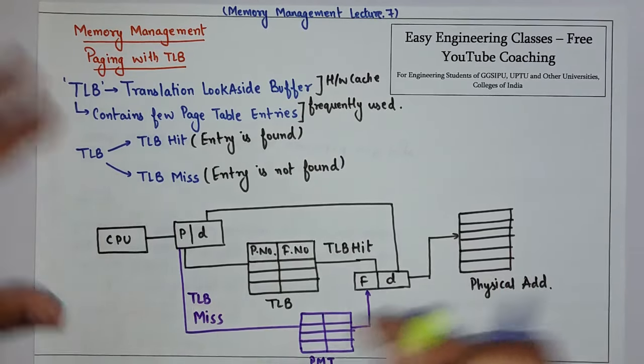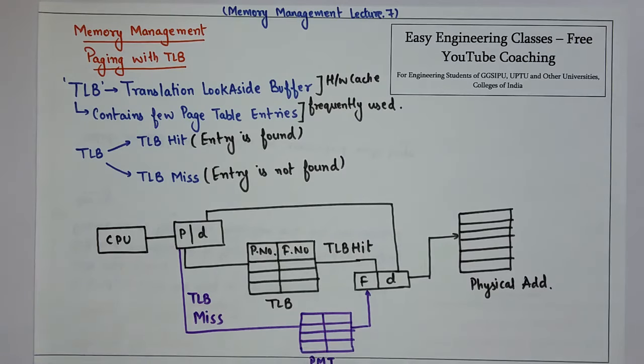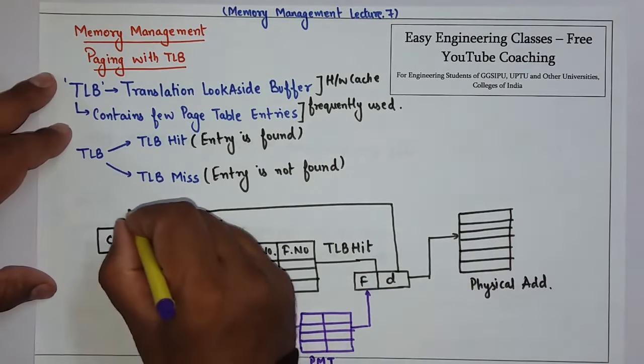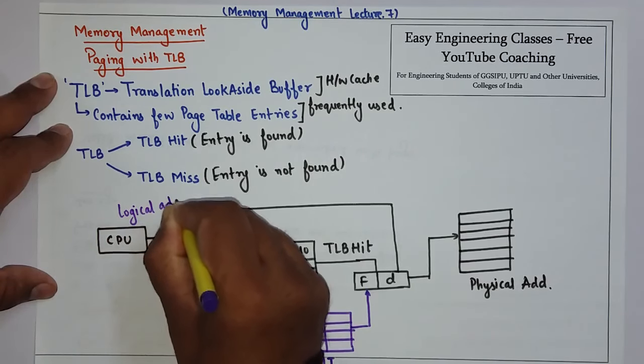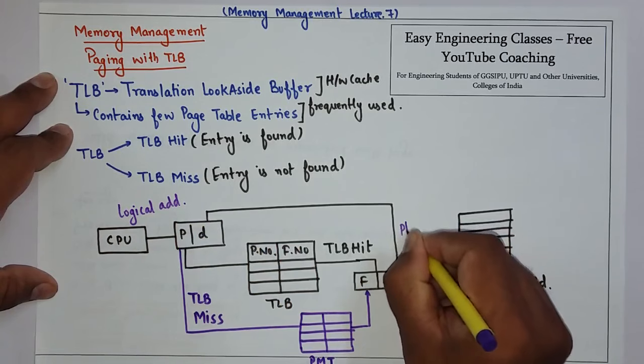So this is how paging with TLB is done. Here we have the logical address, and here is the physical address.